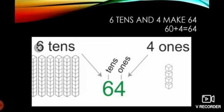Dear children, again, another example. 6 tens, 4 ones. 6 are bundled together which is 10 each. And 4 are separate. So 6 tens means 60 plus 4 ones. 60 plus 4 equals 64.